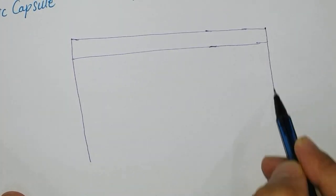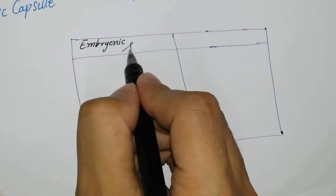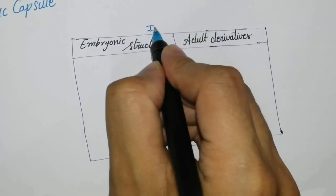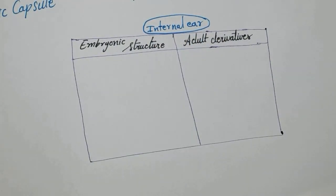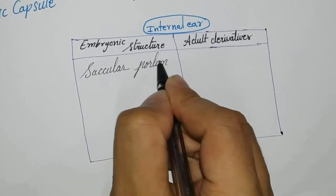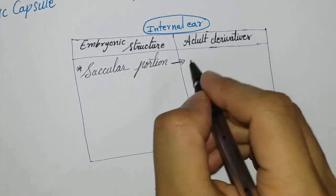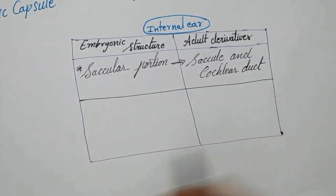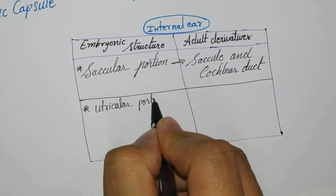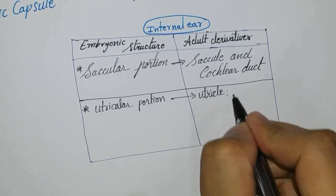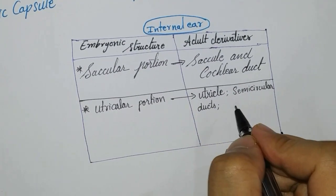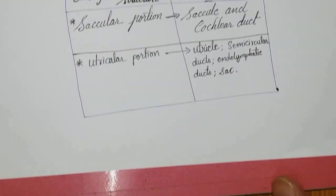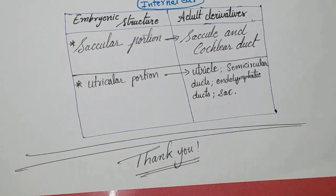We will now see the embryonic structures and adult derivatives of the internal ear. The saccular portion gives rise to the saccule and the cochlear duct. The utricular portion gives rise to the utricle, semicircular ducts, endolymphatic duct, and endolymphatic sac. This completes the development of the internal ear. Thank you very much.